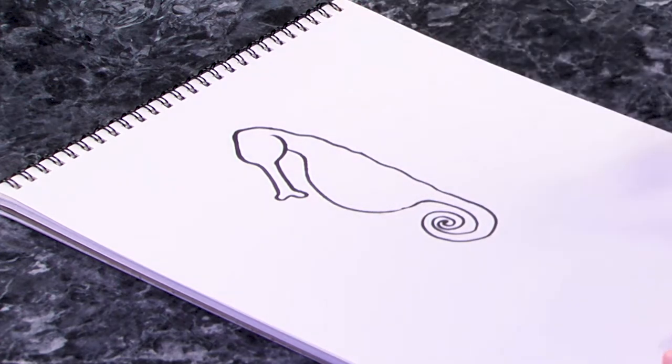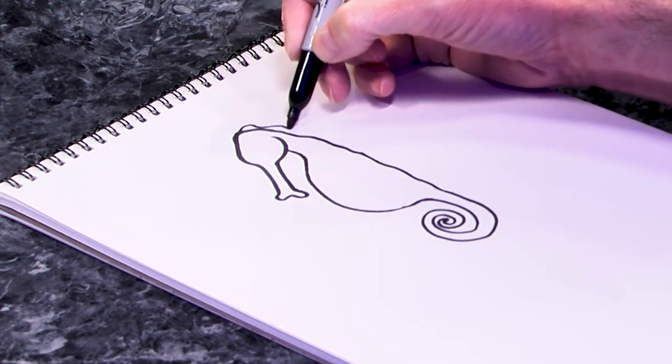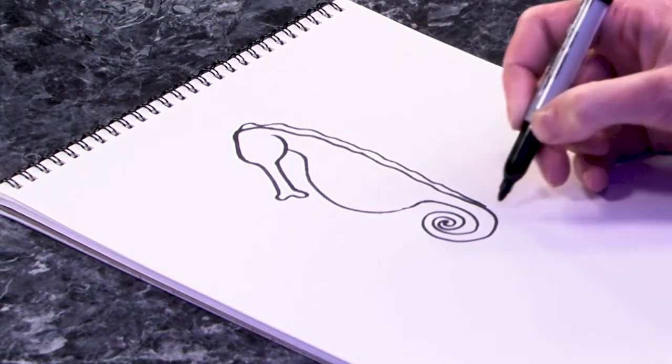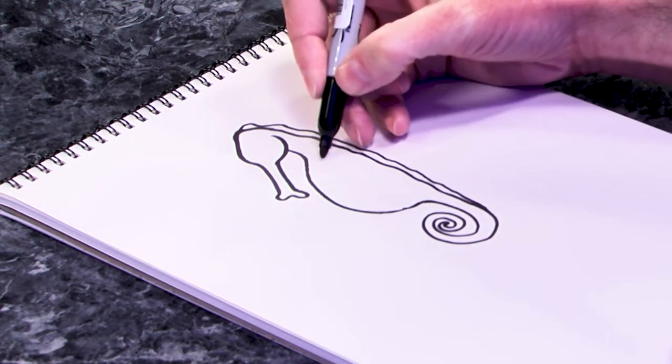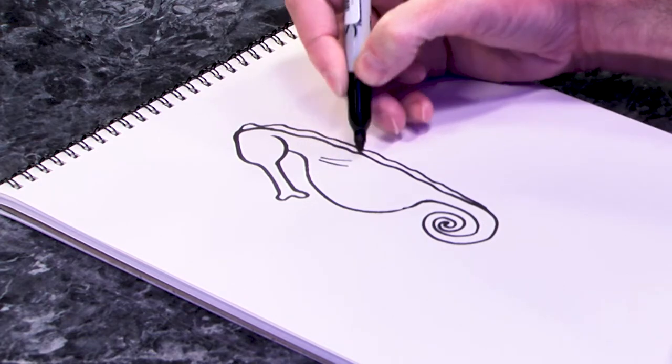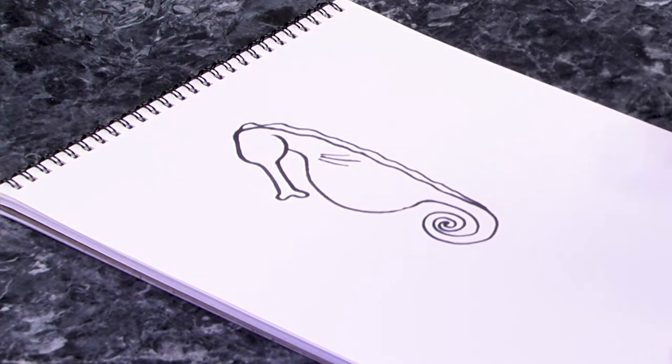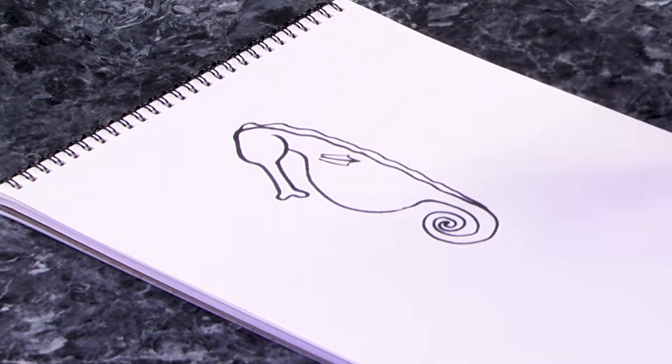His back is going to be a little bit wobbly and then we're going to make sort of a frilly fin kind of thing going down his spine like this. And seahorses have a fin on their side. I believe it's right about here. And I'm going to make three lines together like that. And then connect them like that.